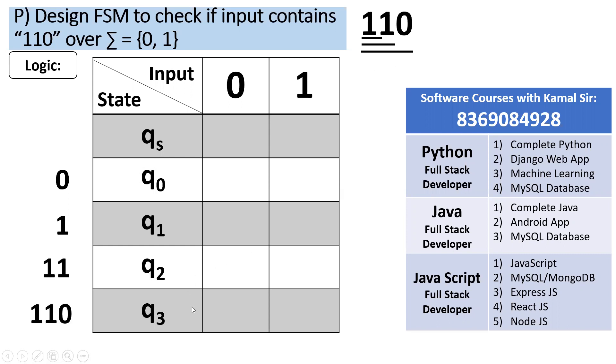Now to start, we'll make the direct entries. Qs and a 0 will be Q0 because it is ending in 0. Qs and a 1 will be Q1 because it is ending in 1. That is Q1.